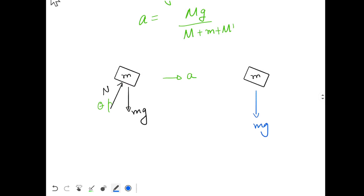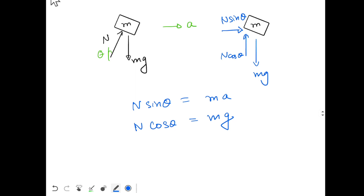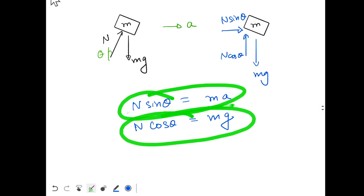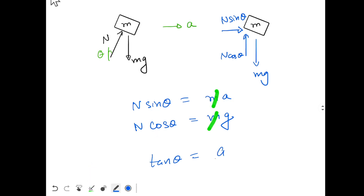Drawing the components of these forces: we have mg downwards, N cos theta upwards, and N sin theta in the horizontal direction. So we can write down that N sin theta equals ma along horizontal, and N cos theta equals mg along vertical. Taking the ratio of these two equations, N cancels out, and sin over cos gives tan theta, and m cancels out to give a over g. So tan theta equals a over g.